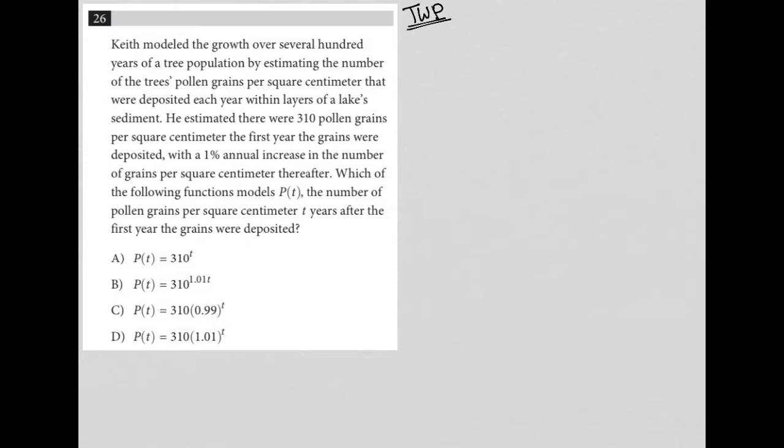All right, so now we have some quantitative information. So year one equaled 310, I would say PG for pollen grains.